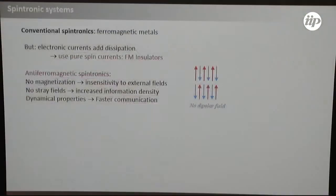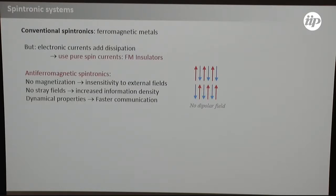One way is to use ferromagnetic compounds that are insulators, because at least you don't have charge currents so you don't heat up, and you can try to work only with spin currents. But there is another way, one step further: using antiferromagnets. In order to copy your terabyte hard disk it might take you 10 seconds with antiferromagnets, whereas it will take you minutes with present memories.